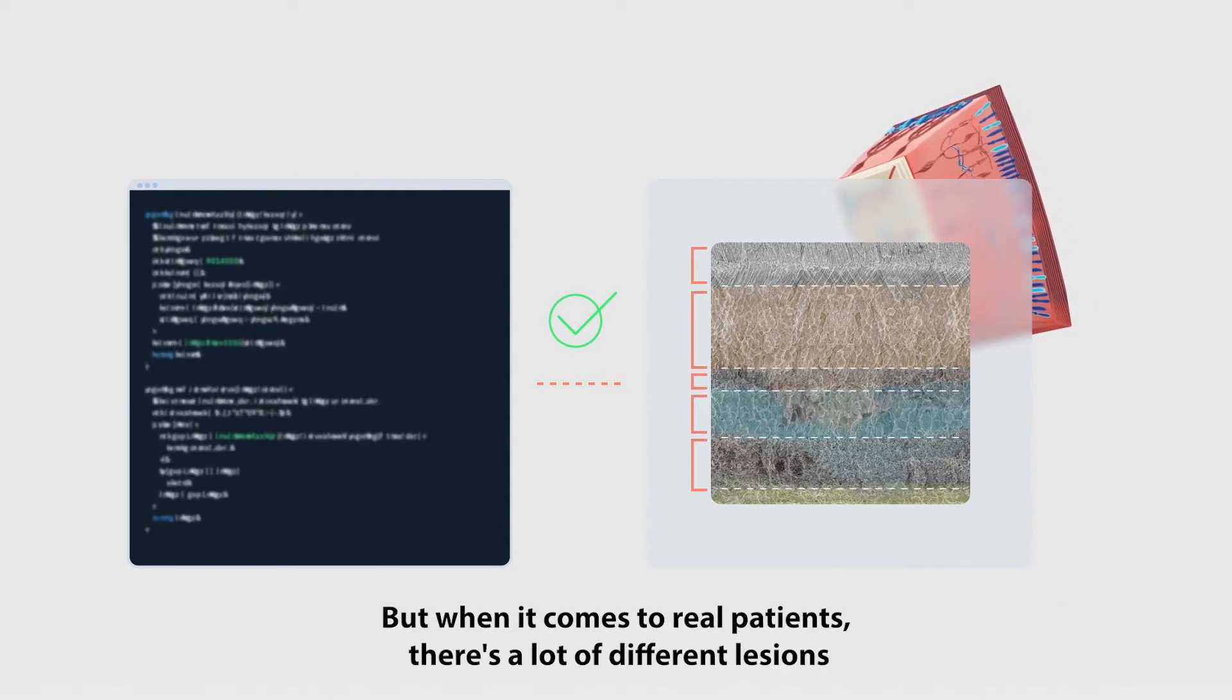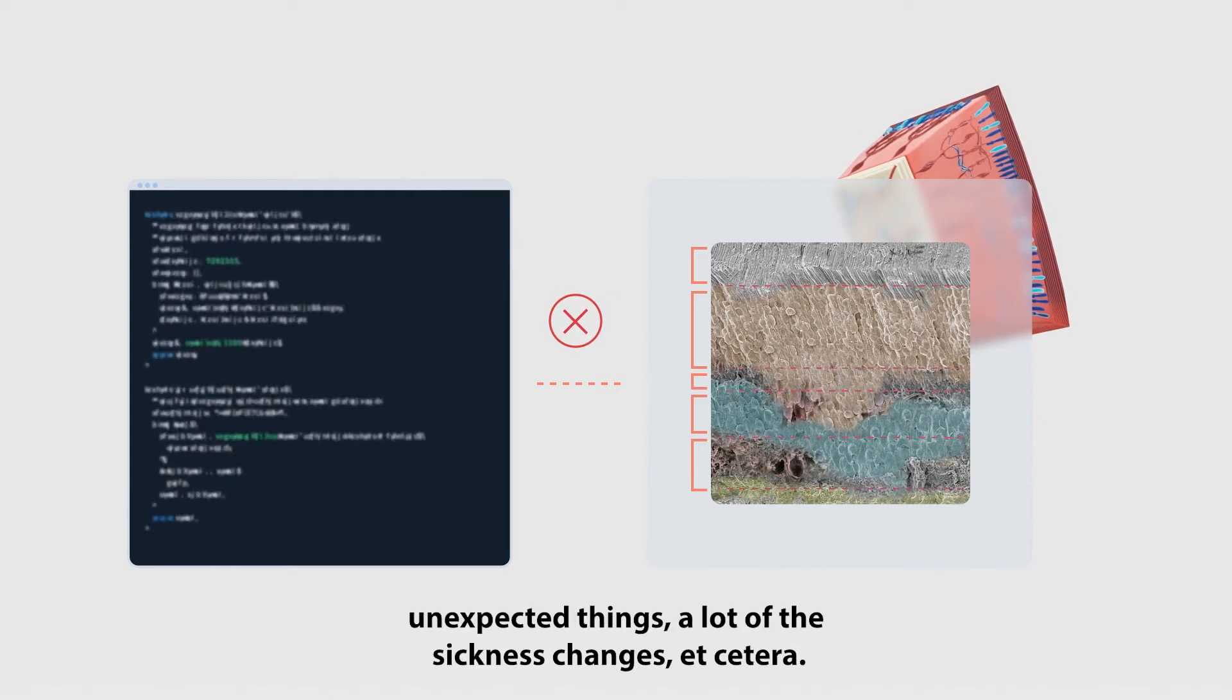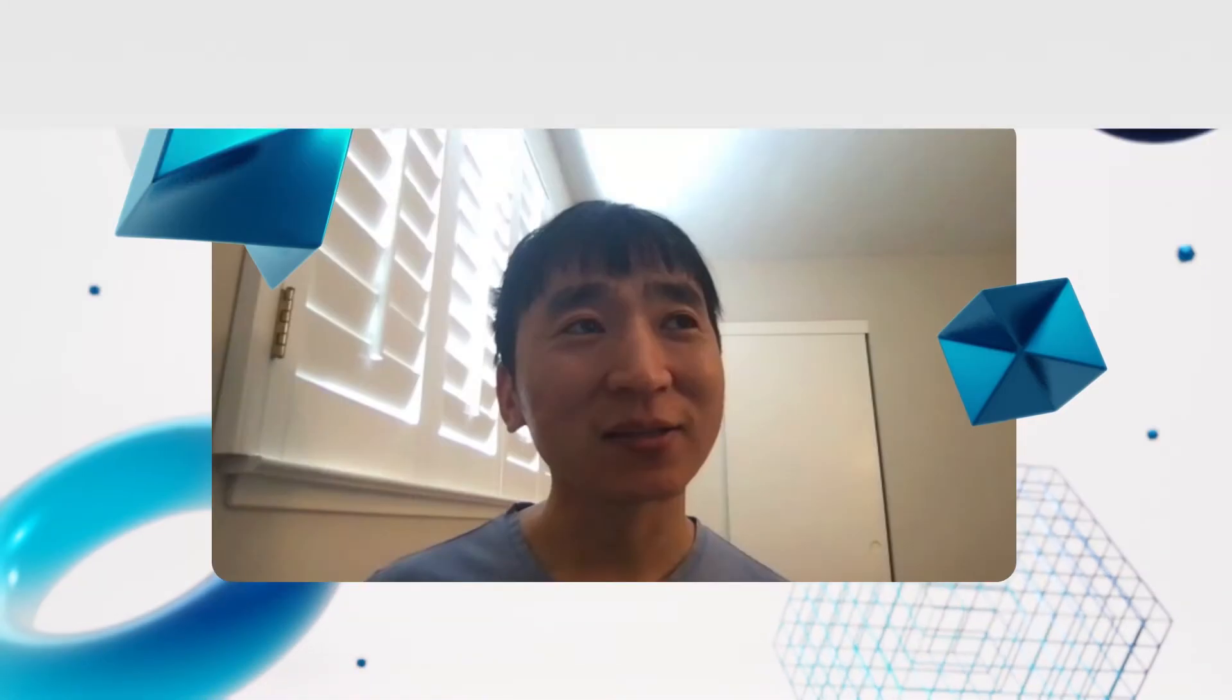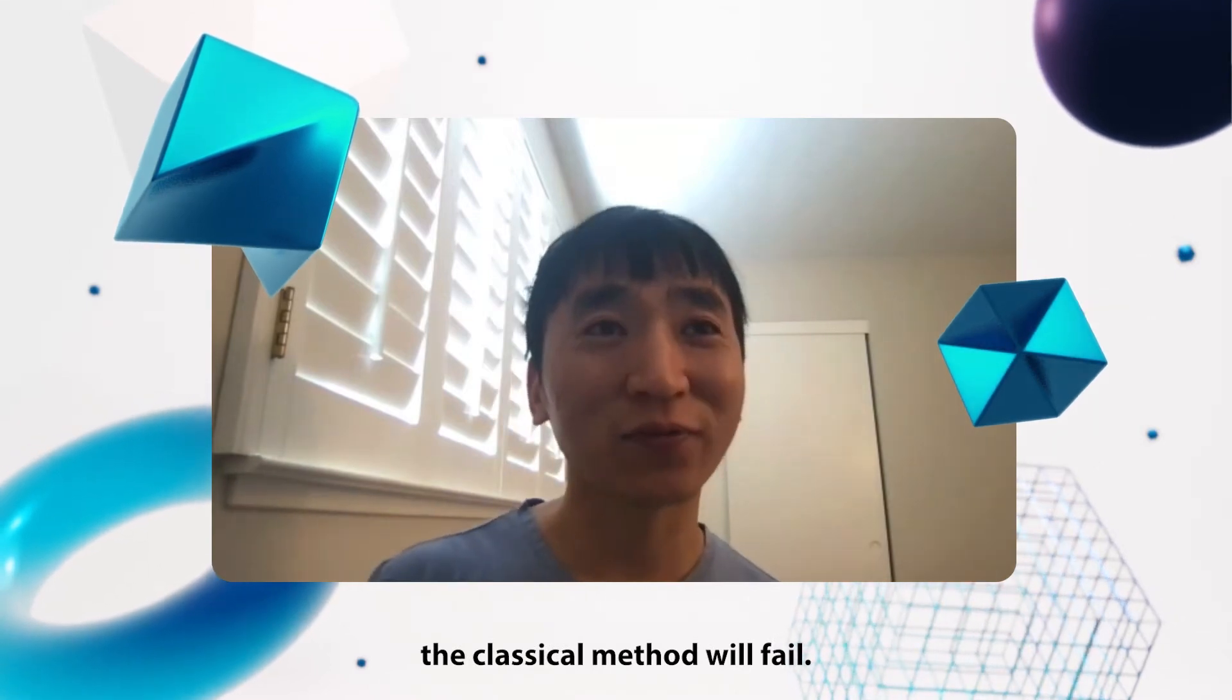But when it comes to real patients, there are a lot of different lesions, unexpected things, disease changes. That makes many assumptions in the classic methods not hold anymore. So basically, whenever you see a patient, the classic method will fail.